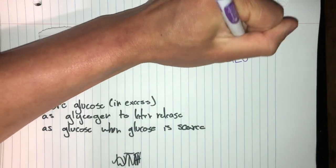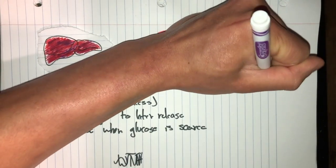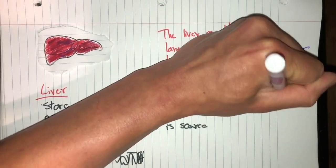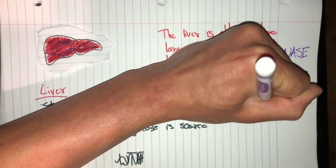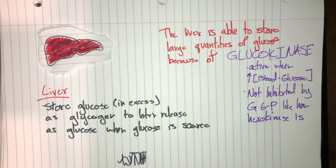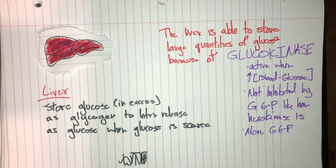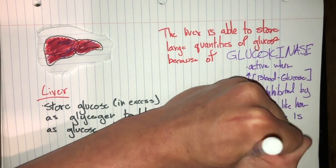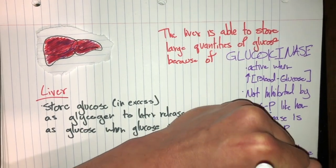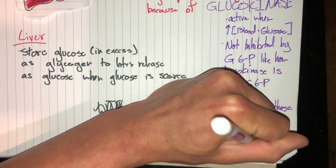The liver is able to store these large quantities of glucose because of an enzyme known as glucokinase. We've actually talked about this guy when talking about glycolysis, related to hexokinase. It's actually an isozyme and it's most active when there is a high concentration of blood glucose and does not get inhibited by glucose-6-phosphate, kind of like how hexokinase is. So more glucose-6-phosphate can trigger glycogen synthase as well as insulin secretion, which ups those glycogen stores.